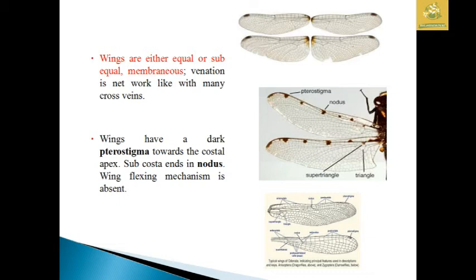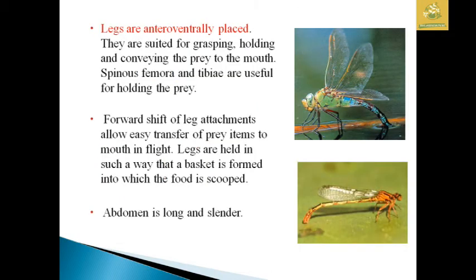Wings have a dark pterostigma towards the costal apex. The subcosta and nodus help with wing venation. The wing flexion mechanism is absent. The legs are antero-ventrally placed and suited for grasping, holding, and governing prey with their mouth, but they cannot walk. The spiny femora and tibia hold prey, and the forward shift of leg arrangement allows easy transfer of prey to the mouth during flight, like a basket to scoop food.